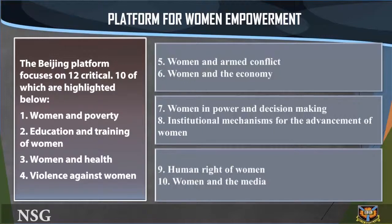Although the Beijing Declaration and Platform for Action is a stand-alone document, it builds upon consensus and progress made at earlier United Nations conferences and summits, particularly the Conference on Women in Nairobi in 1985, which developed the Nairobi Forward-Looking Strategies for the Advancement of Women. The Beijing Platform focuses on 12 critical areas of concern that must be addressed to achieve gender equality and women empowerment, 10 of which are highlighted below.